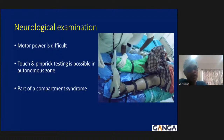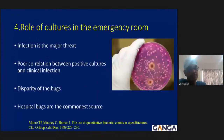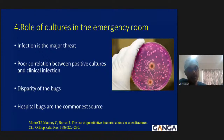Neurological examination: motor power assessment is difficult due to injured muscles, but touch and pin-prick testing in the autonomous zone of peripheral nerves is possible and is also part of compartment syndrome examination. Principle 4 — the role of cultures in the emergency room: despite infection being a major threat, literature shows poor correlation between positive cultures and clinical infections, and hospital bugs are the commonest source of infection. Routine cultures are therefore not practiced in the emergency room.